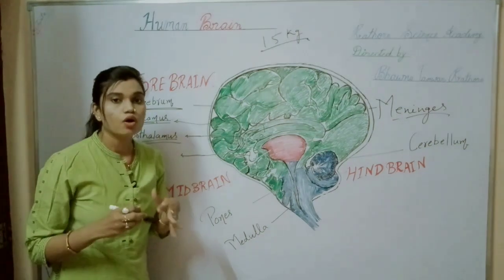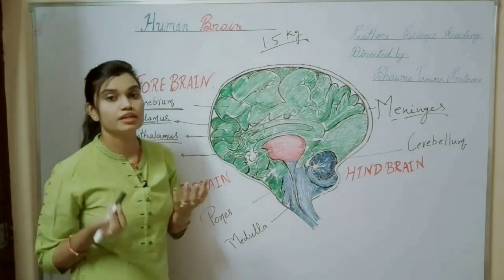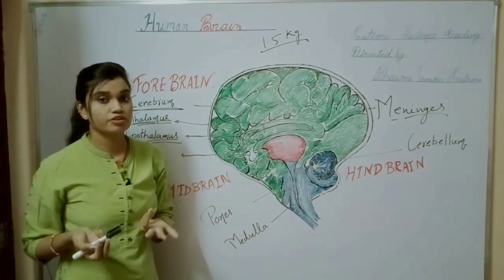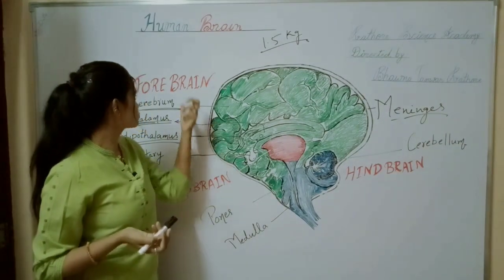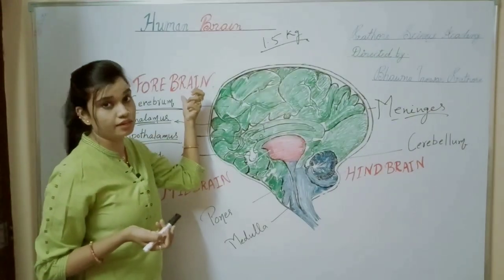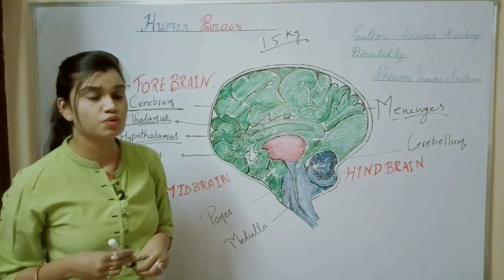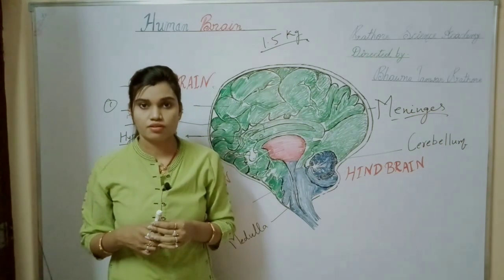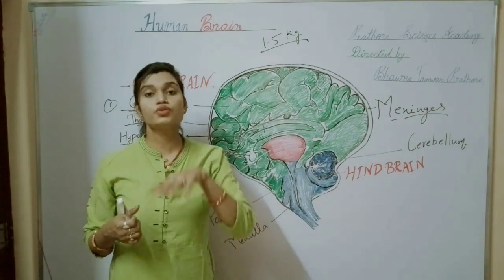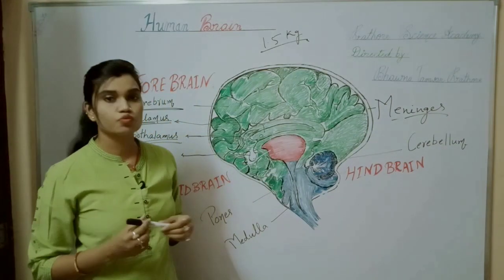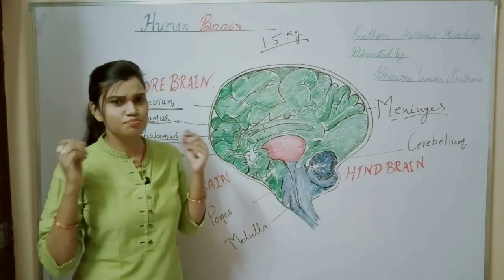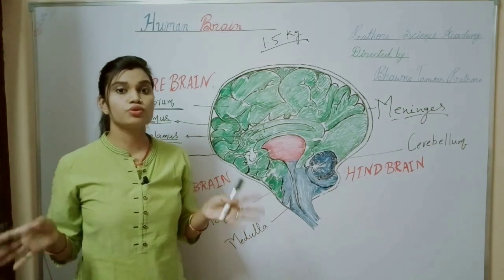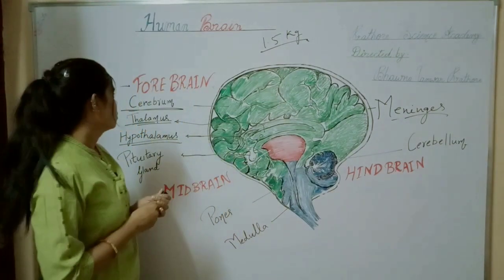The forebrain is the largest part of the brain — you can easily identify it. All intelligence work, all thinking, planning, action, consciousness, and hormone secretion — all these come from your forebrain. It performs all voluntary actions. Voluntary means actions which are in your control. If you want to do it, you will do it; if you don't want to, you will not. Like you want to walk, you will walk; you want to talk, you will talk; you want to listen to music, you will listen.